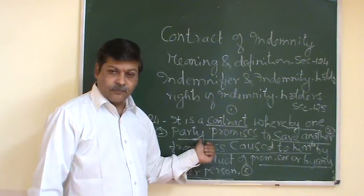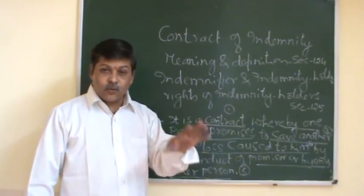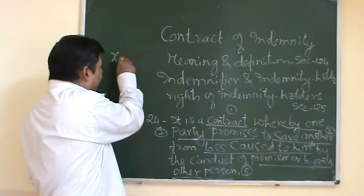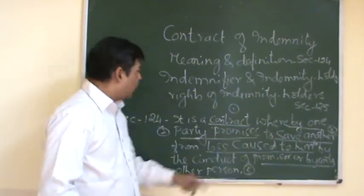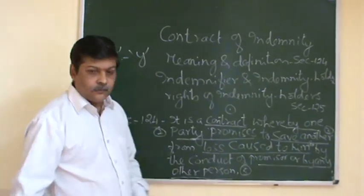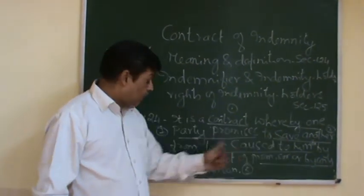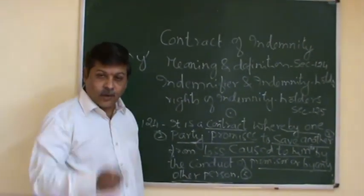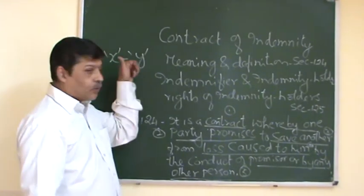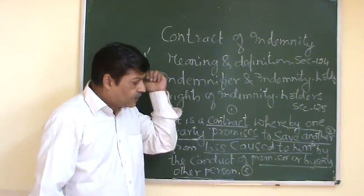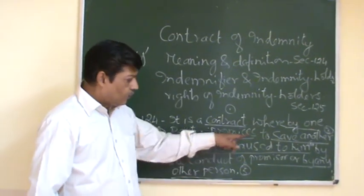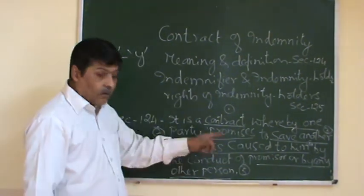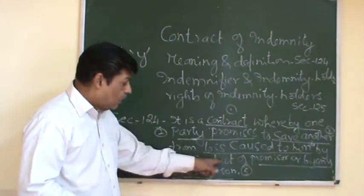X has promised that he will make up whatever loss is caused to Y — he will save Y from that loss. The loss caused to Y may be by the conduct of the promisor himself, or by any other person. So X has promised: if Y incurs a loss from Z, X will reimburse it. That loss may come by the conduct of the promisor itself or by any other person.